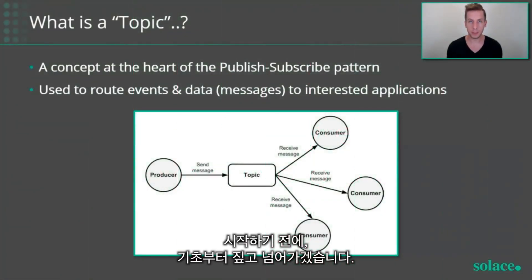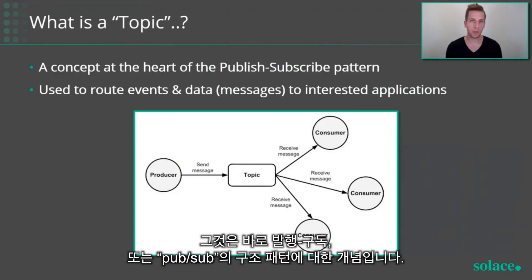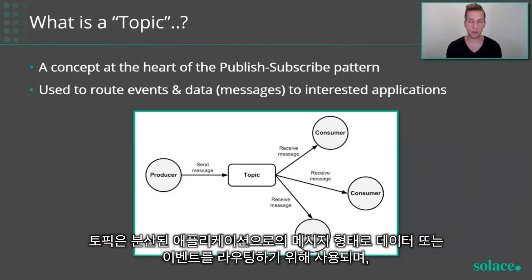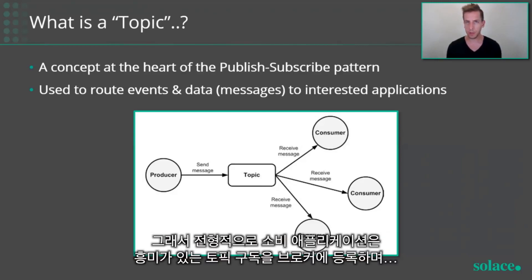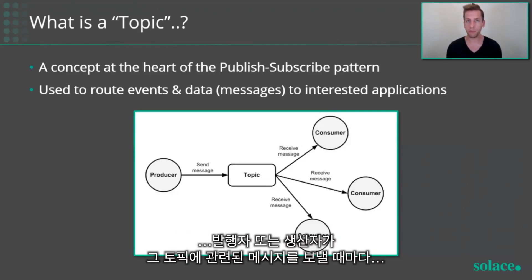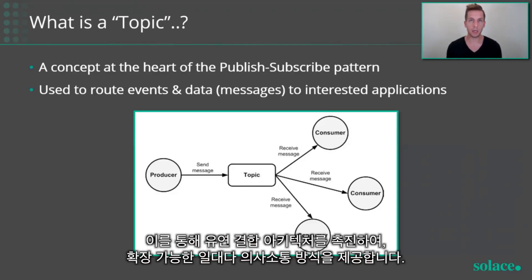So before we get into it, let's make sure we cover the basics first. What exactly is a topic? Well, it's a concept of the publish-subscribe or pub-sub architectural pattern. Topics are used to route data or events in the form of messages to distributed applications, often using a message broker or an event broker. Consuming applications will register a topic subscription of interest with the broker, and then whenever a publisher or producer sends a message on that topic, the broker will forward the message to any consumers that have a matching topic subscription.